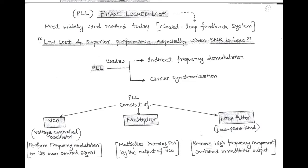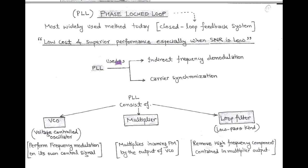Hello friends, our next topic is Phase Locked Loop, or in short PLL. For the demodulation of FM waves, PLL is widely used today because of its low cost and superior performance, especially in situations of low signal-to-noise ratio. PLL is a simple closed loop feedback system. In practice, Phase Locked Loop is widely used as indirect frequency demodulation as well as carrier synchronization.